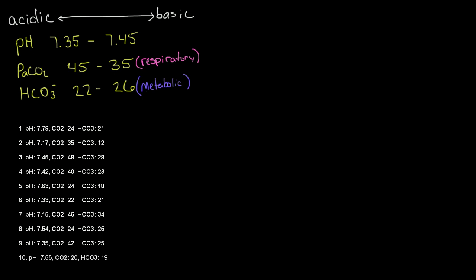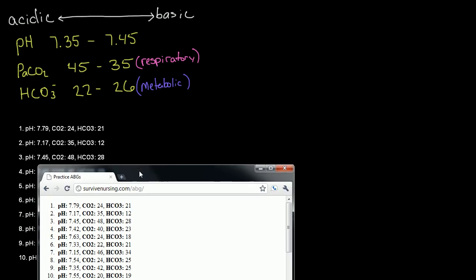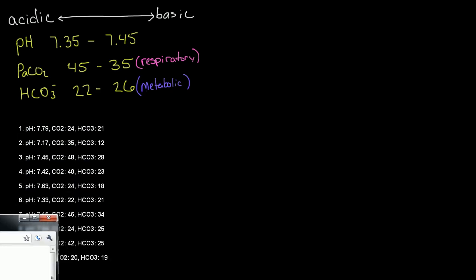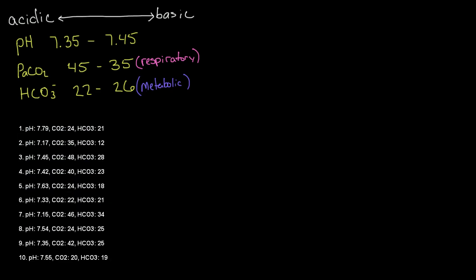We're just going to be working through some extra practice problems here on reading ABGs. These problems are available on survivenursing.com. This will generate 10 different ABG practice problems that you can do, and whenever you're ready you can just click show answers and check your results. So let's go ahead and work through these 10 so you can get some more exposure to this.